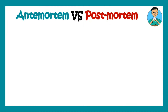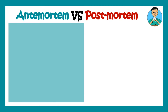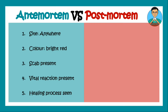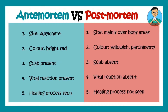It is important to know whether an abrasion was caused before the death of the person or after the death — that is, antemortem or postmortem. Antemortem abrasions can have a bright red color, the scab can be present, vital reaction is present, and healing process is also seen; they can be seen anywhere on the body. Whereas postmortem abrasions are mostly seen on the bony prominences and are formed due to handling of the body in the morgue. Color can be yellowish or parchmenty, scabs are generally absent, vital reactions are absent, and healing process is not generally seen, because the body is obviously dead.